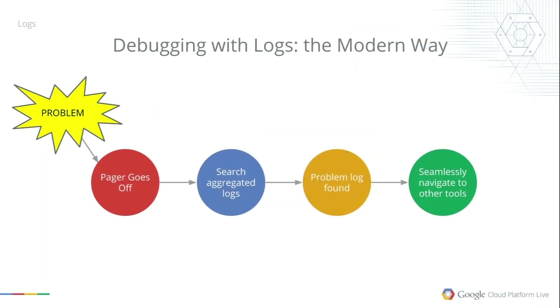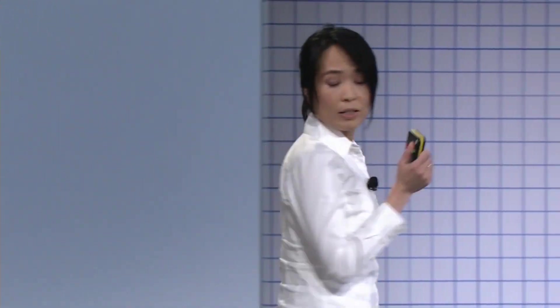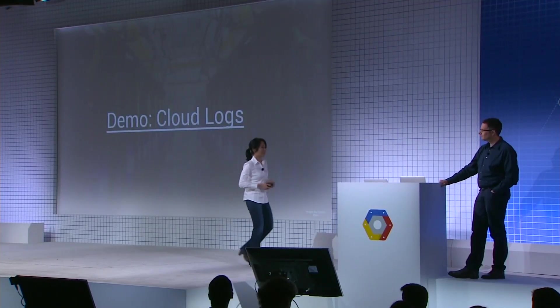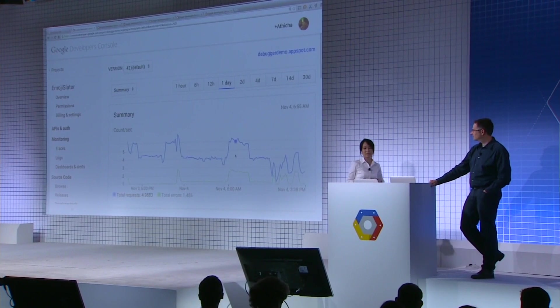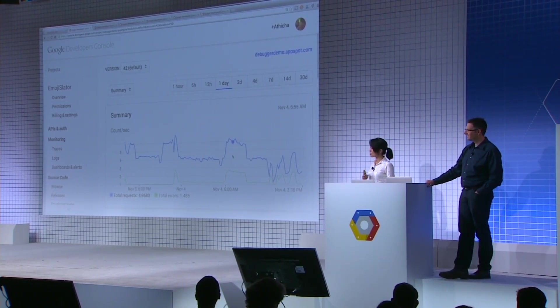Once you find the problem, then what? You have to go to another debugging tool, re-enter the context of your investigation to further root-cause the problem — or if you're good, you just edit the code and redeploy. What we want to do in the modern way of debugging with logs is eliminate the cycle of guessing. We want you to be able to search logs in aggregate, find the problem log right away, and from there seamlessly navigate to other debugging tools without having to re-enter context. Let me show you a demo of Cloud Logs with the Emoji Translator.